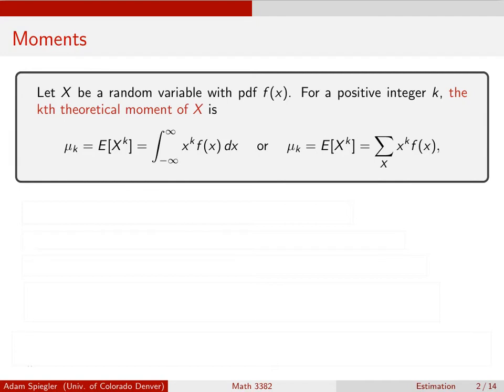We denote it with a mu sub k and it's basically the expected value of X raised to the kth power, where again k is 1, 2, 3, 4, and so on. So for working with a continuous distribution that would be an integral. If we're working with a discrete distribution, that would be a sum. And we've seen some of these already. For example, the first moment, that's just a fancy word for the mean, right? The expected value of X to the first power, that's what we have just been calling the mean of the population.